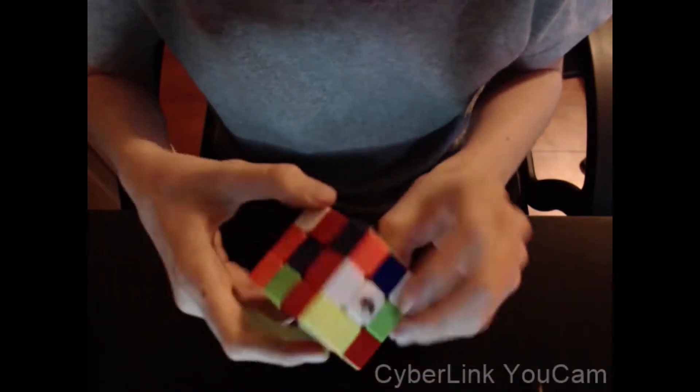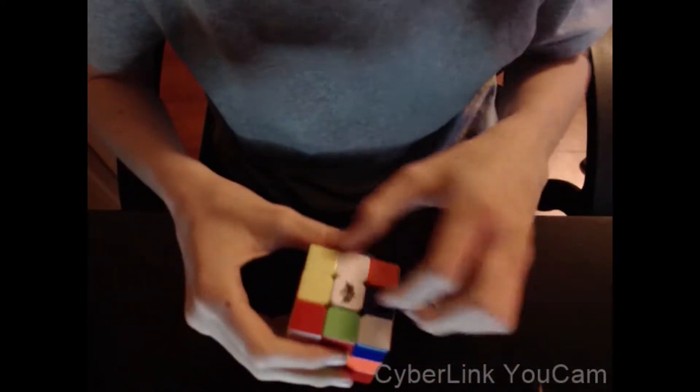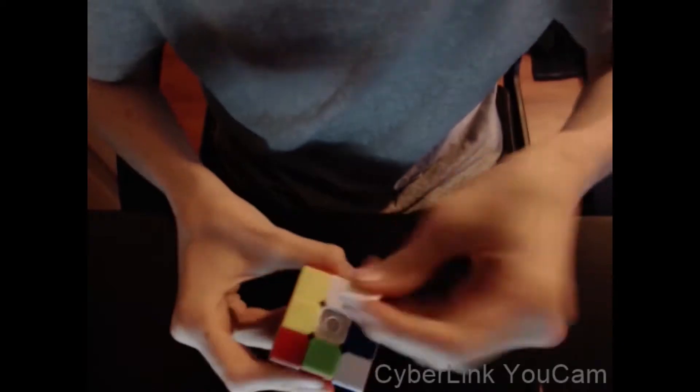The first thing you're going to want to do is go to the white side or whatever side you choose and just pop this piece off here. You're going to get out your nearest screwdriver and unscrew the screw that is in the middle.